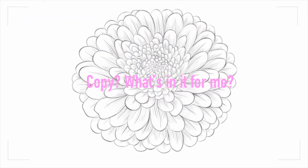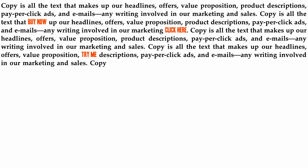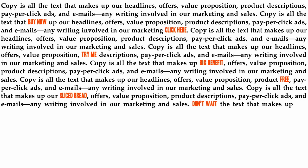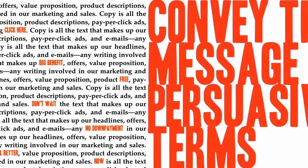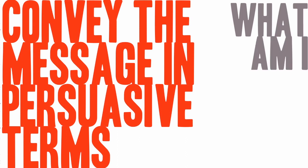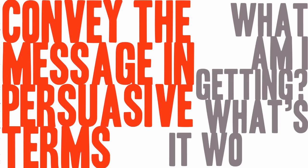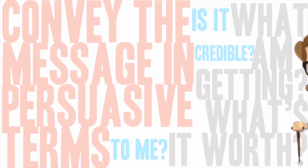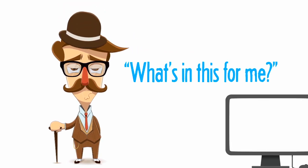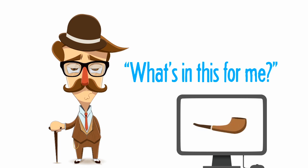Copy — what's in it for me? Copy is all the text that makes up our headlines, offers, value proposition, product descriptions, pay-per-click ads, and emails — any writing involved in our marketing and sales. Copy contributes to the value side of the checklist by conveying the offer in persuasive terms. It can also contribute to credibility by talking about guarantees, achievements, awards, or media appearances, or by giving testimonials and endorsements. Human beings are inherently concerned about themselves when making decisions. Make sure your website copy is not company-centric, otherwise the prospect will have to translate it to what it means for them, which prevents conversion.